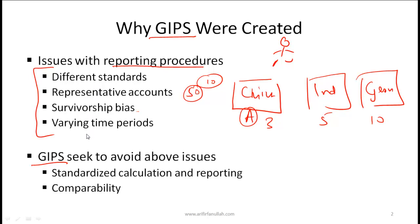Very simplistically, the CFA Institute has defined these Global Investment Performance Standards so that if an investor knows a certain asset management company is following these standards, they essentially know what sort of calculation that company is doing to report results. If different companies are compliant with GIPS, we know their reported results can be compared, which is obviously a huge advantage to the investor.